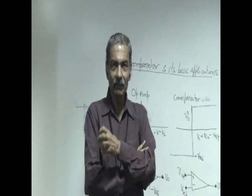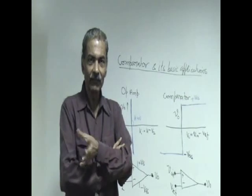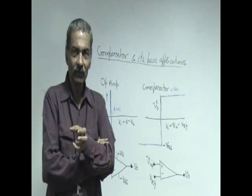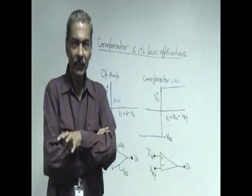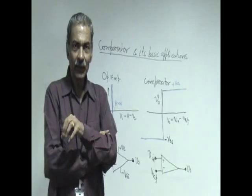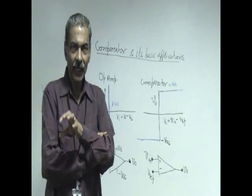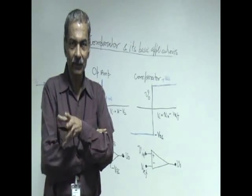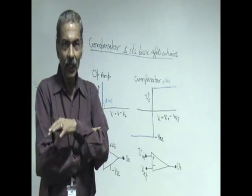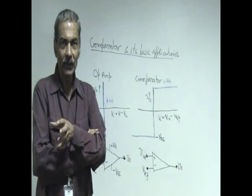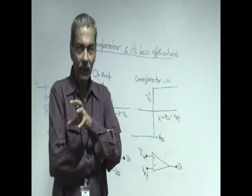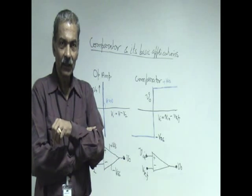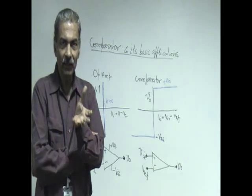A comparator is a basic building block which is used as an interface circuit between analog and digital. It compares the input with a reference and then gives the time at which input crosses the reference. At that time the output of the comparator goes from low to high or high to low. The low and high are the digital outputs, low indicates 0, high indicates 1 and therefore, it is one of the most useful interface components of analog to digital world.